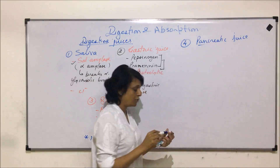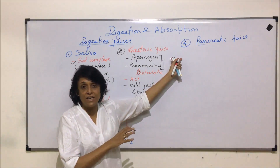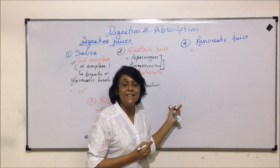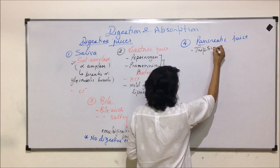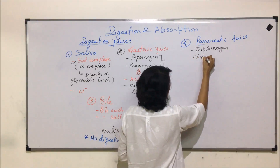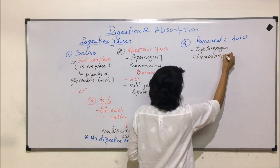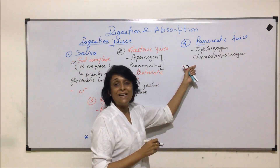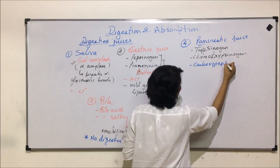The fourth digestive juice is pancreatic juice, secreted by the acinar cells of the pancreas. It contains protein-digesting enzymes in their inactive form: trypsinogen, which is inactive trypsin, and chymotrypsinogen, which is inactive chymotrypsin. Both are proteolytic enzymes. There is also one more enzyme called carboxypeptidase.